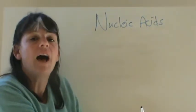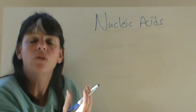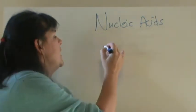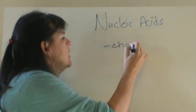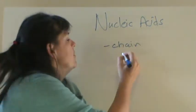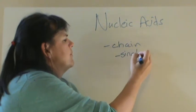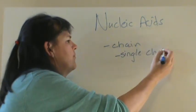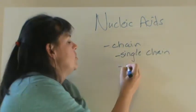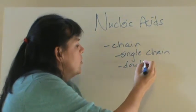Nucleic acids have what kind of structure? Well, the structure is that they have a chain, and that chain can be a single chain, or it can be a double chain, depending on which category we're talking about.